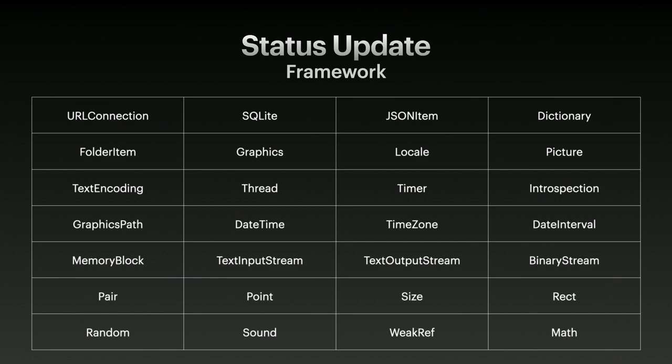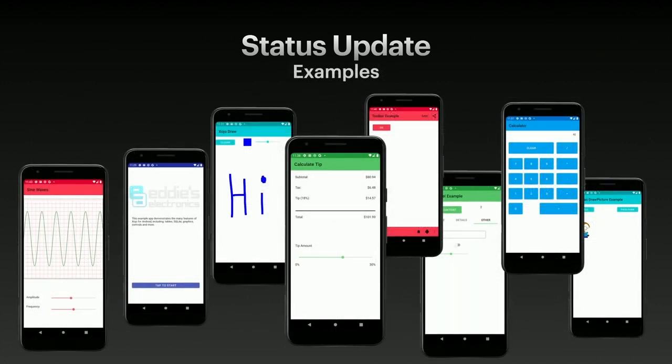Simply put, the majority of the Zojo framework is now present in Android, and of course there is more on the way after the initial release. We're always growing our set of examples for Android — they cover a wide variety of framework functionality and application types to help people hit the ground running. As we go into the 2023 R2 testing cycle, all of these examples will be integrated directly into the Project Chooser, so they'll be very easy to grab, test, and evaluate.